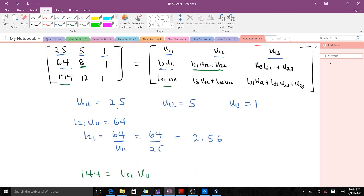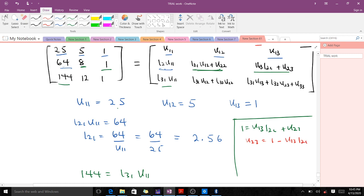The composition is not difficult at all. The next one is that this component equals this component. That means 1 would be equal to U13 times L21 plus U23. So you have to find U23 because you already have U13 and L21. Our U23 here will be equal to 1 minus U13 times L21, which will be 1 minus 1 times 2.56. And when you do this computation, of course, you end up with negative 1.56. How many so far? 7. Left with 2.